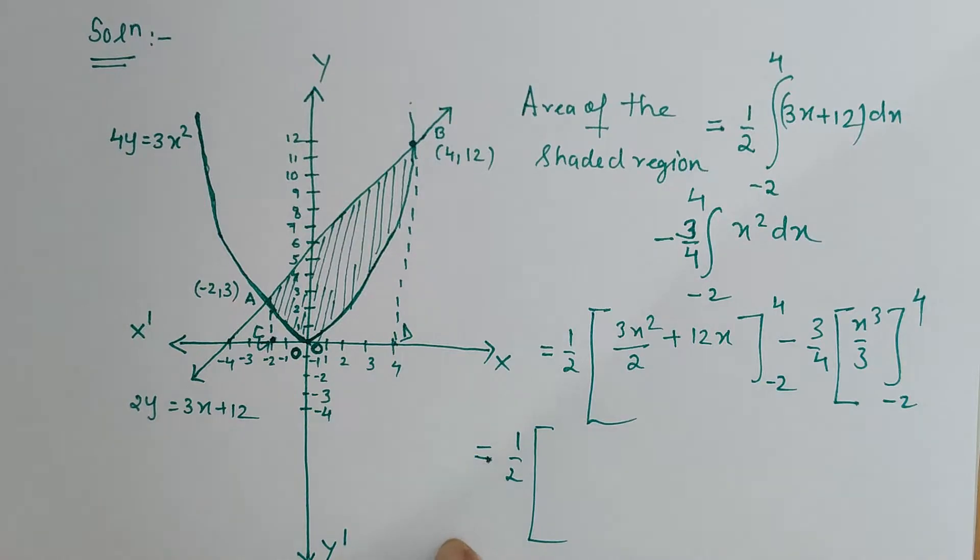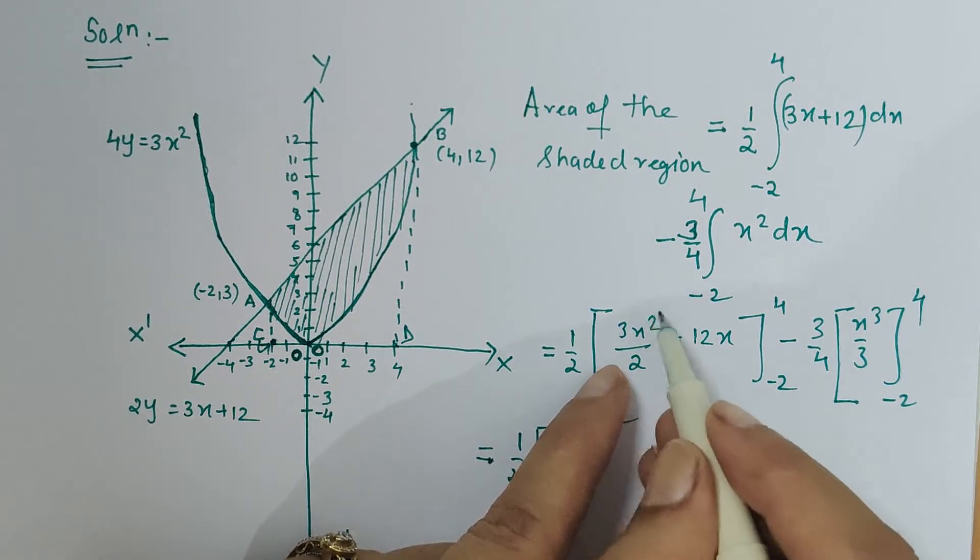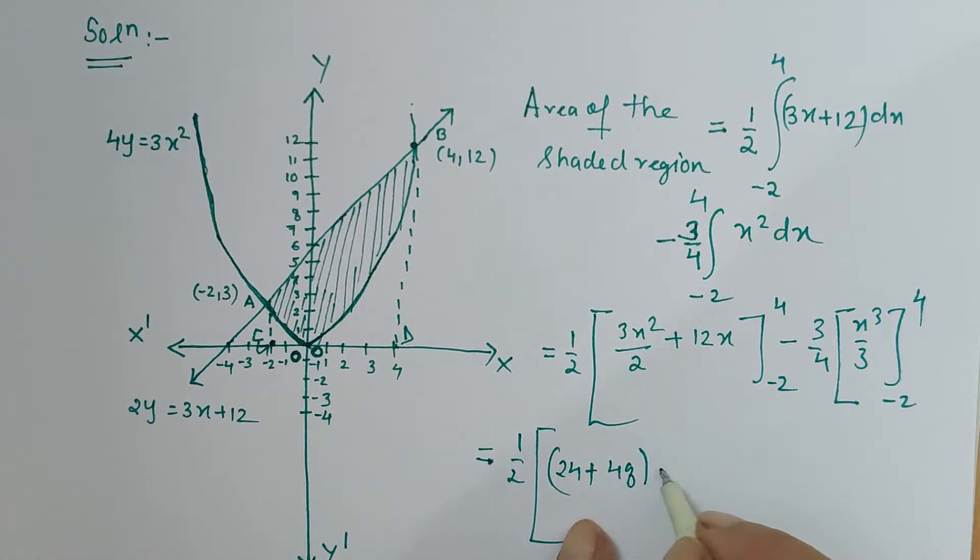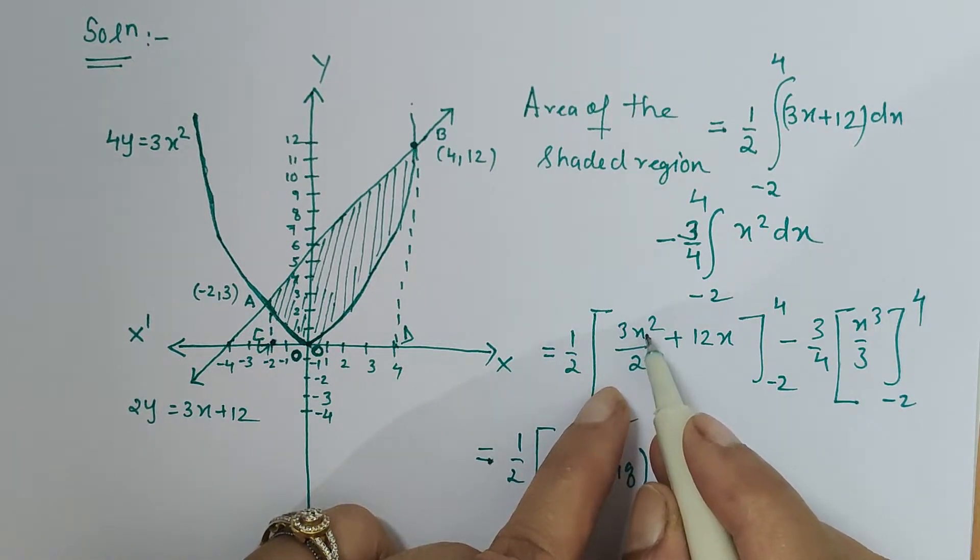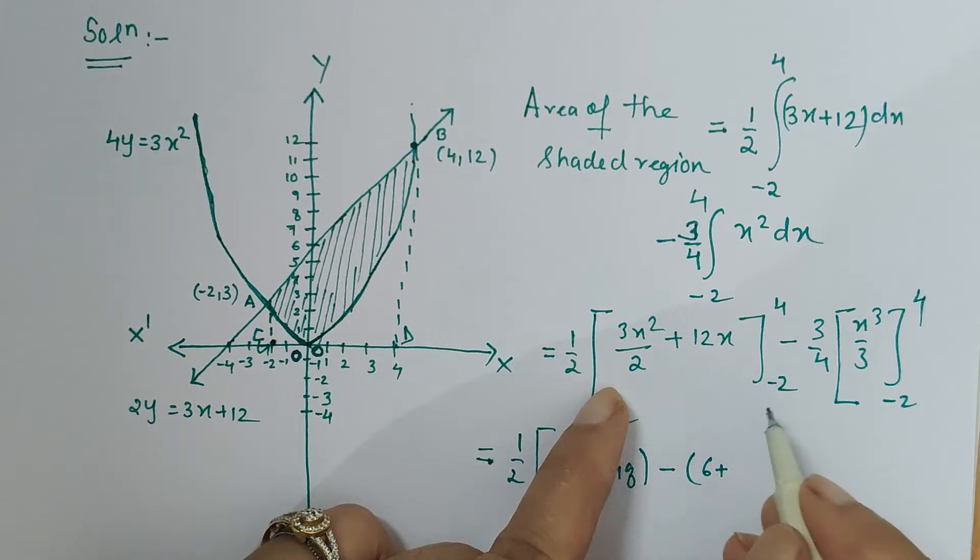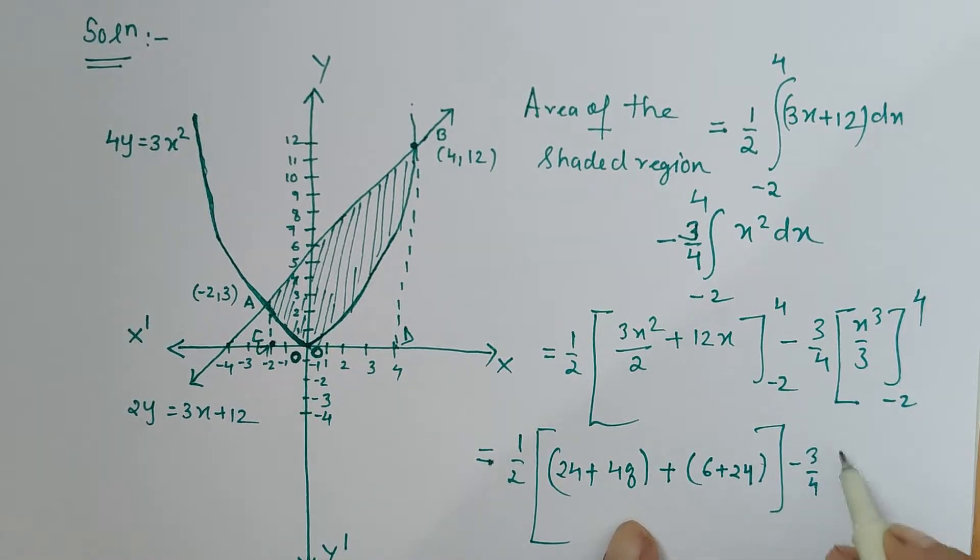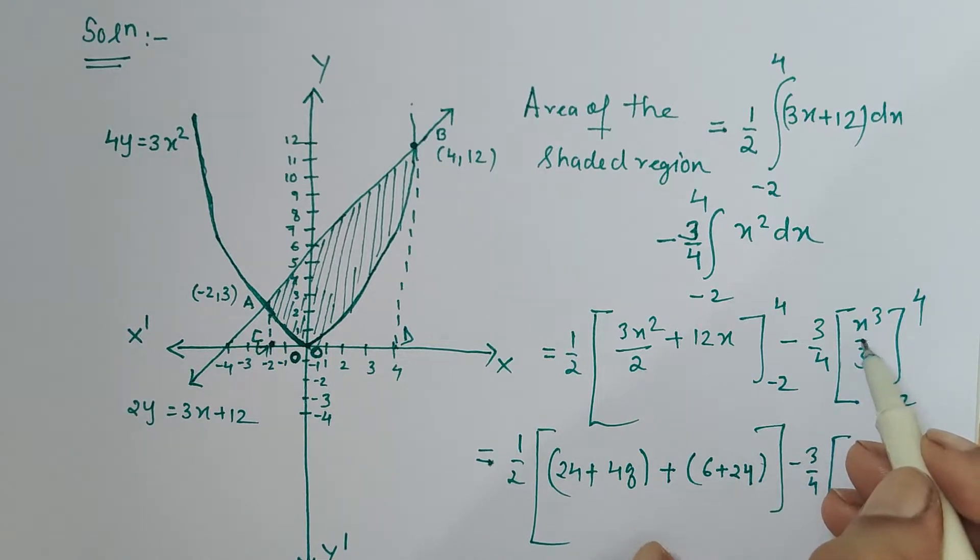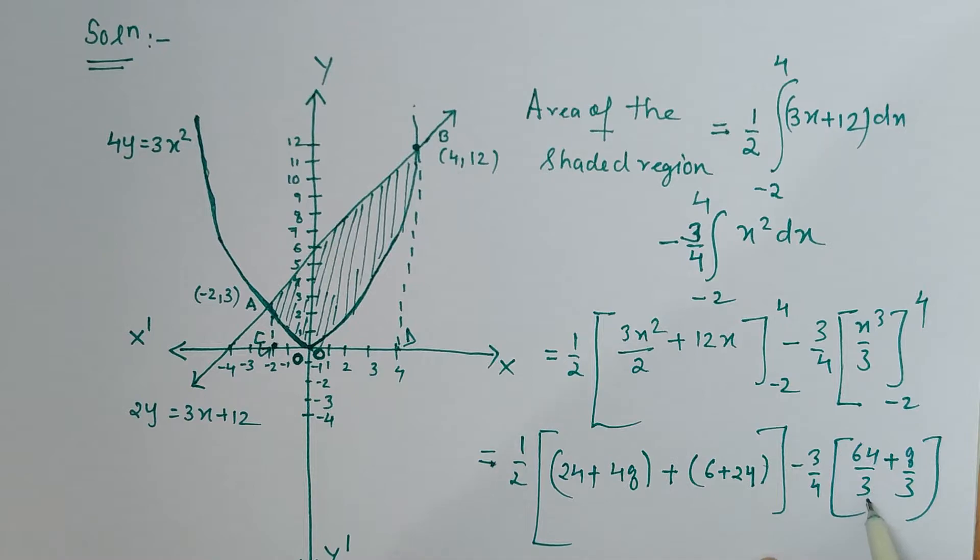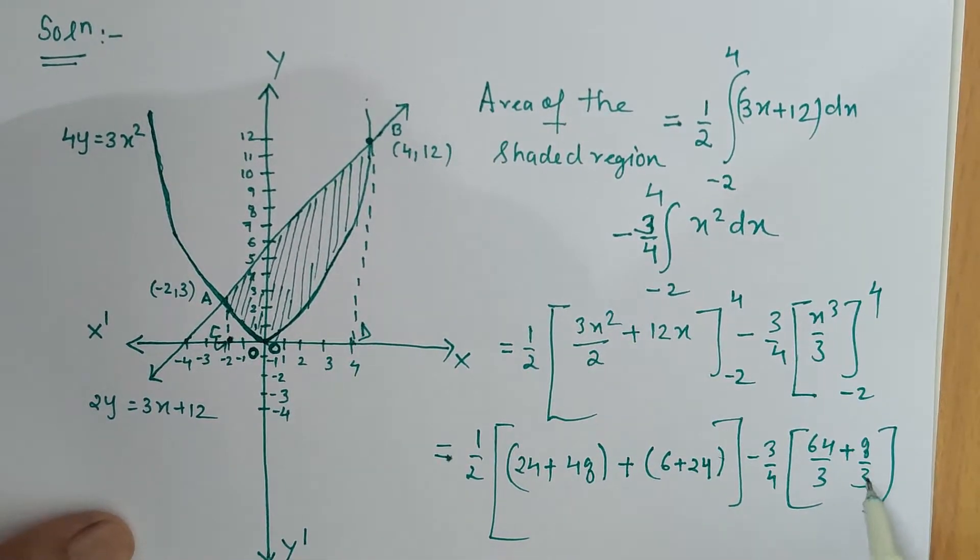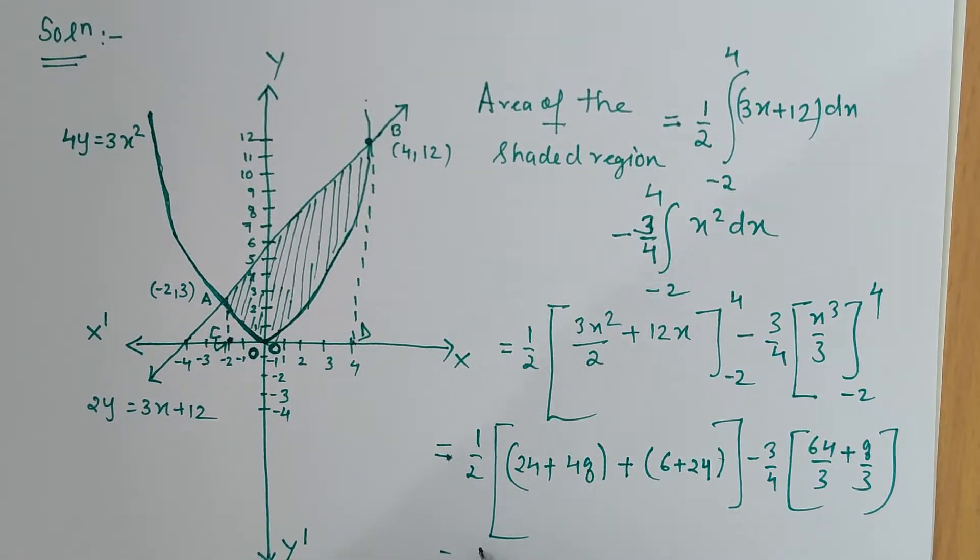Let's calculate. When we put the upper limit 4: 4² is 16, 3×16/2 is 24, plus 4×12 is 48. Minus by putting the lower limit, when I put -2 I'll be getting 3×4/2 = 6, plus 12×(-2) = -24, but then this minus will make this plus. Minus 3/4, let's put the upper limit first: 4³ is 64, 64/3, minus lower limit. The power is odd so it will be minus 8, so minus minus brings plus, so plus 8/3. Now let's calculate. This is half of...